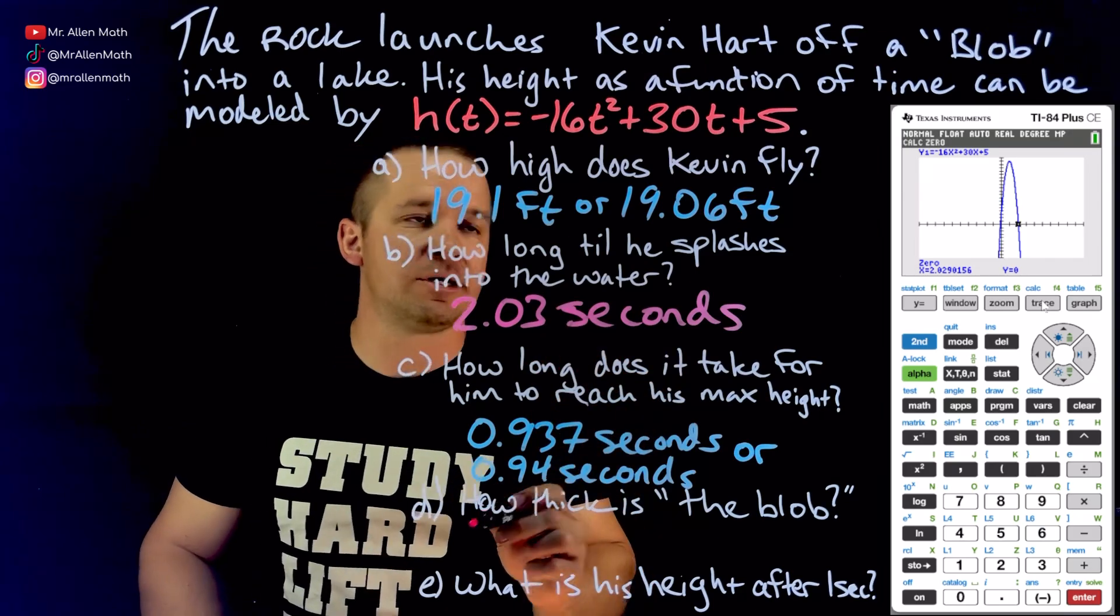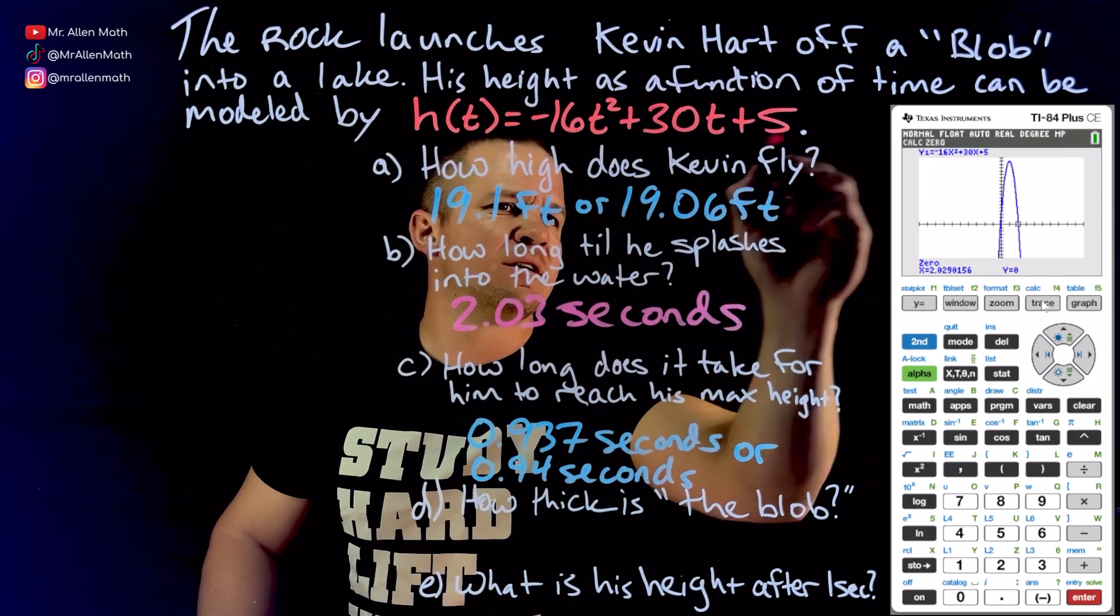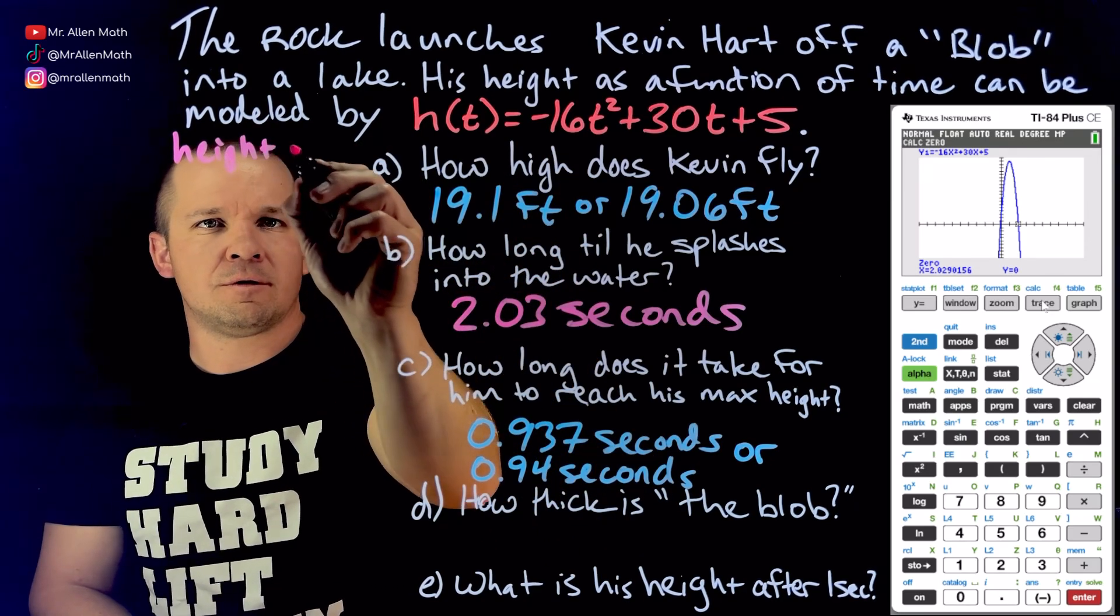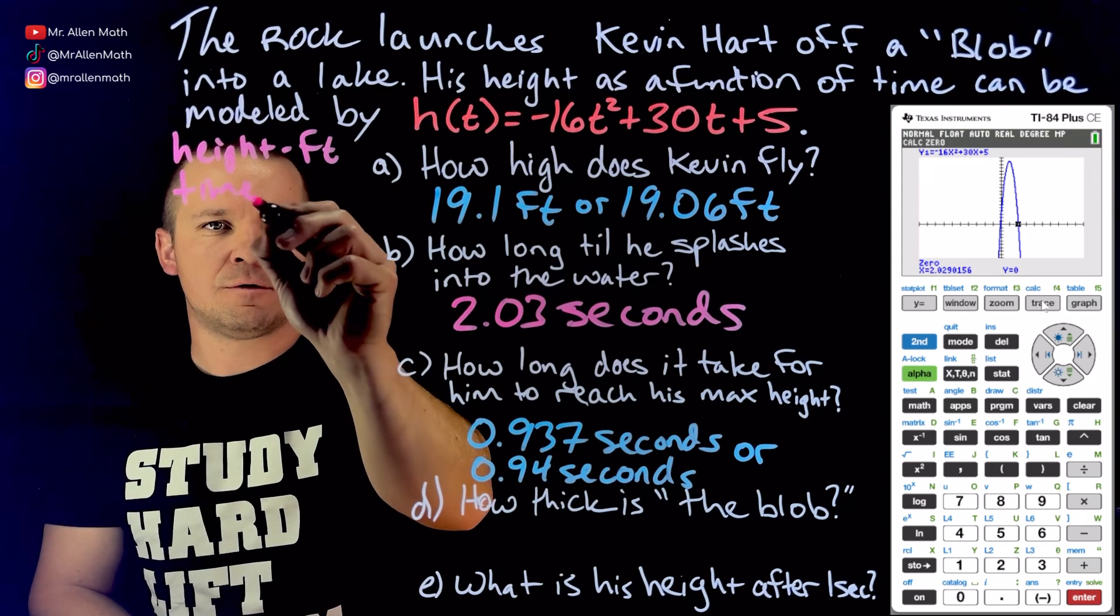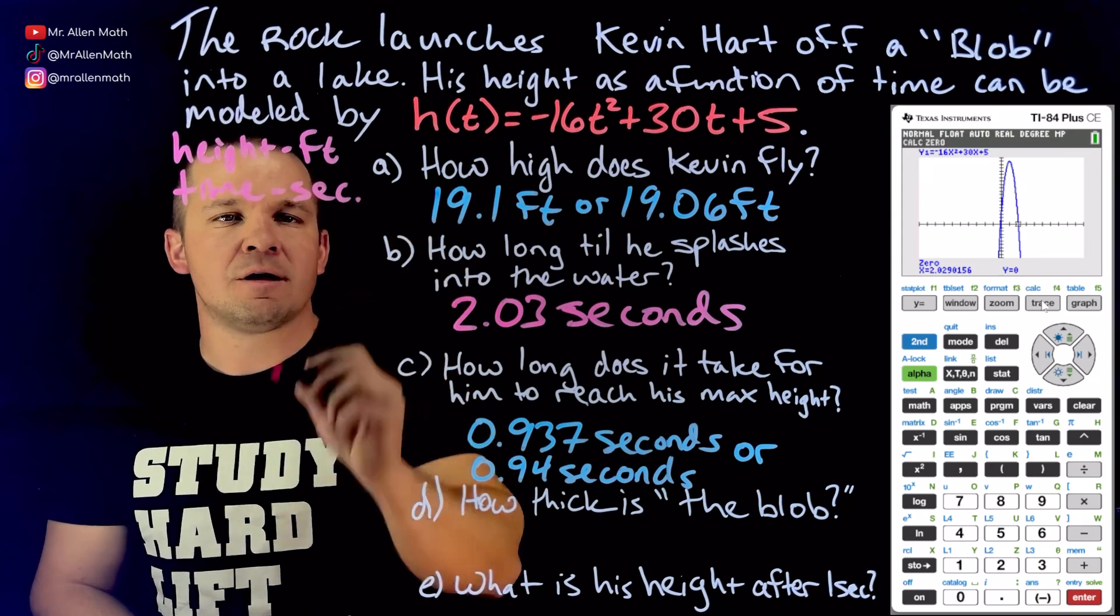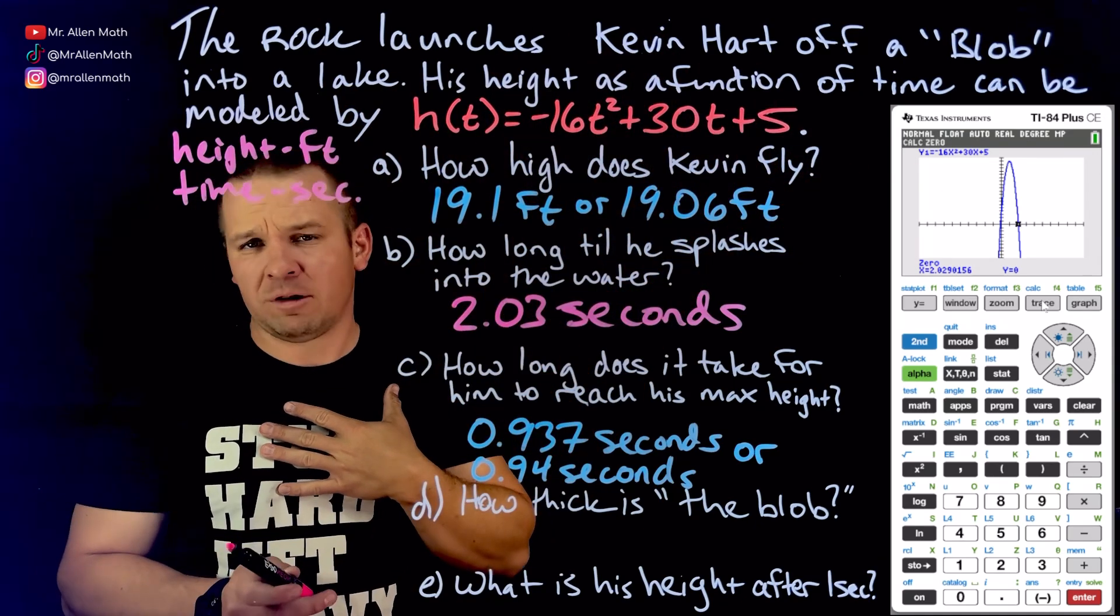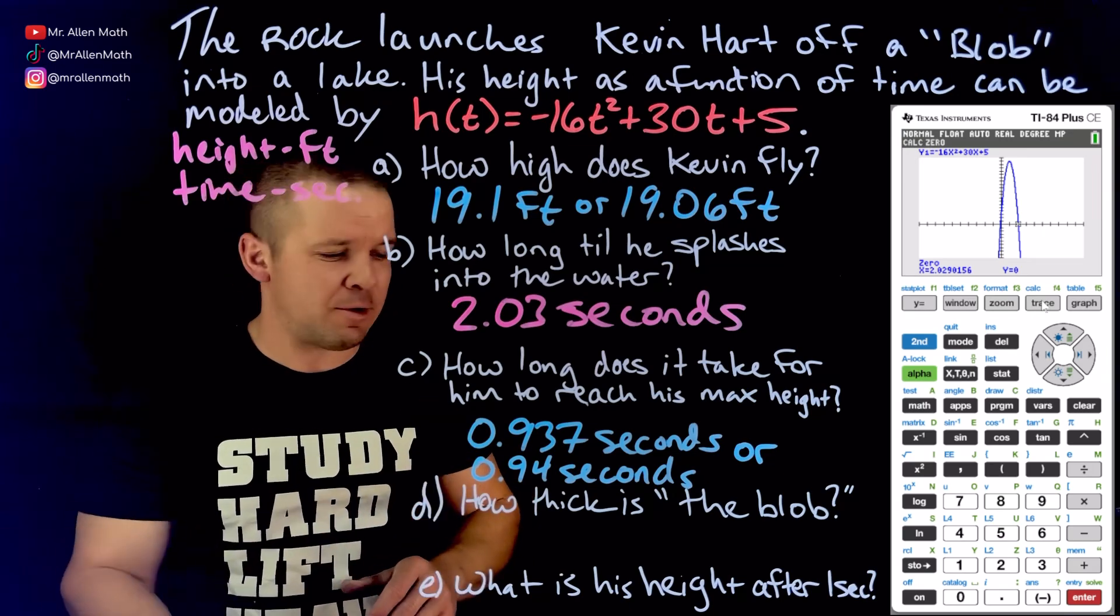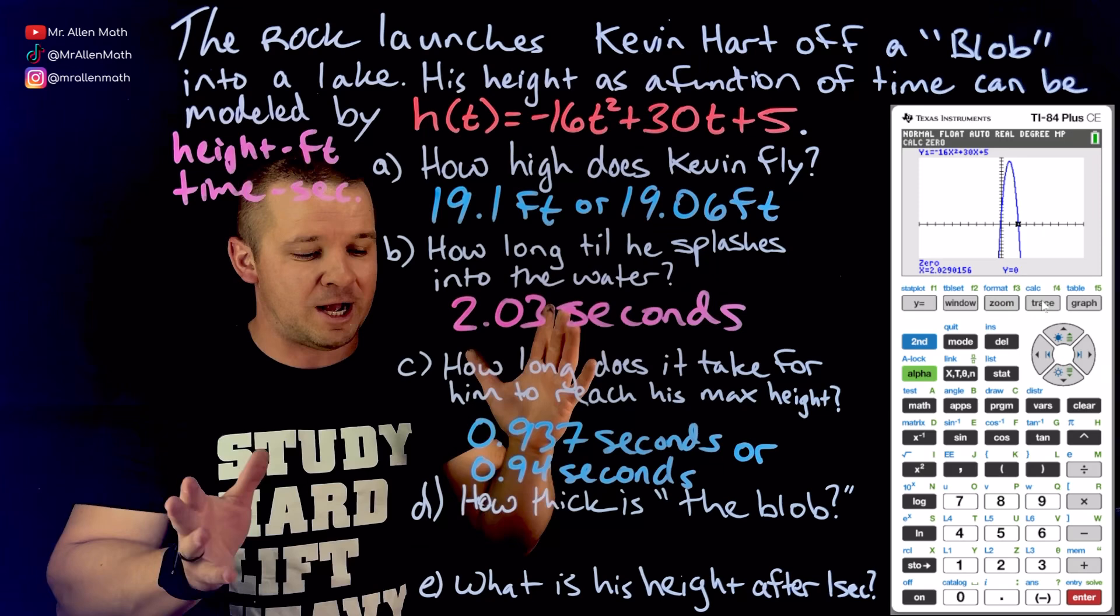So this would be my amount of time, how long it takes until he splashes into the water. See, it's like a 2.029, so 2.03 seconds. Make sure that you put those units there. I should have said that guy, where height, height would be feet. Feet, and then time, seconds. I should have put that in the problem. I apologize. How informal of me? I'll fix that next time. So, anywho, 2.03 seconds until he splashes into the water.